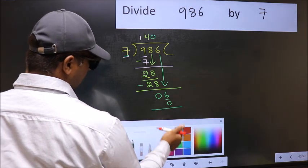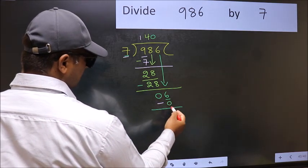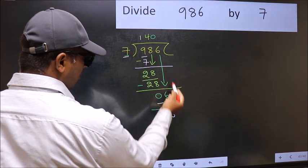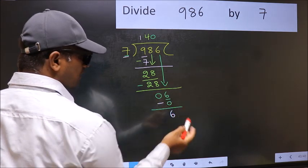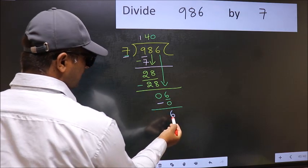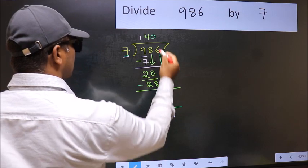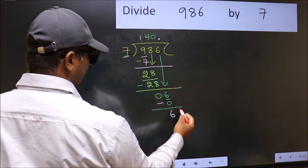Now you should subtract. 6 minus 0, 6. Over here, we did not bring any number down. And 6 is smaller than 7. So now you can put dot and take 0.